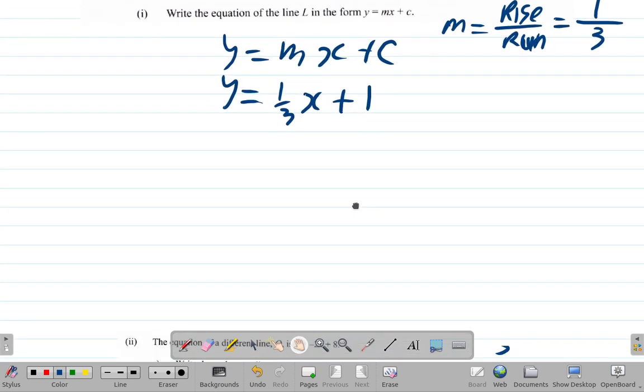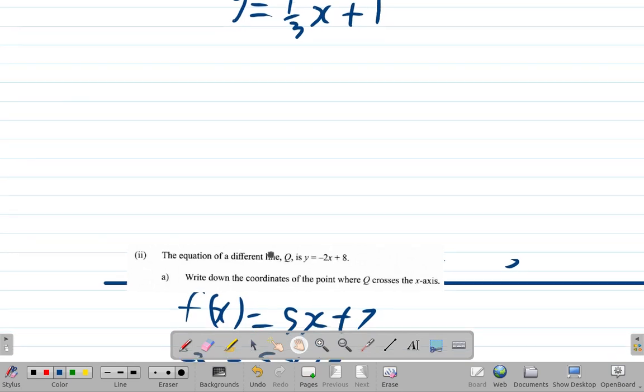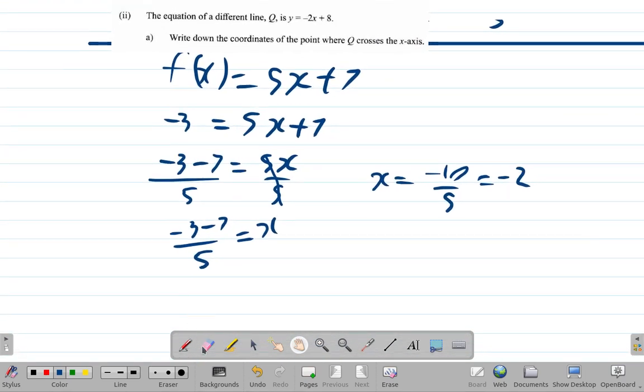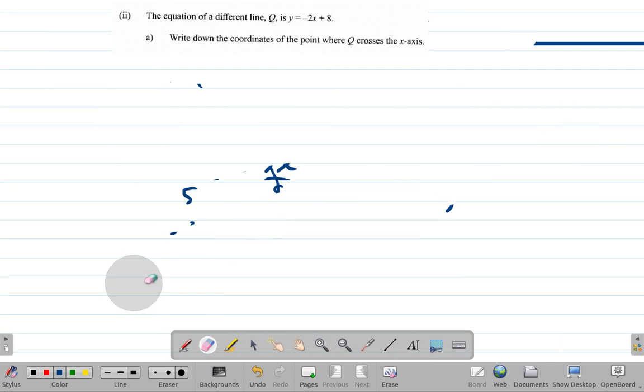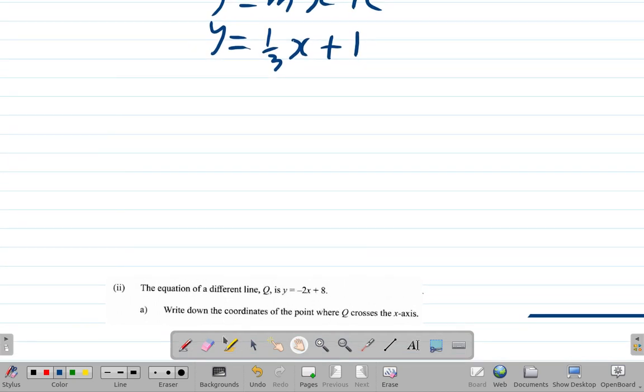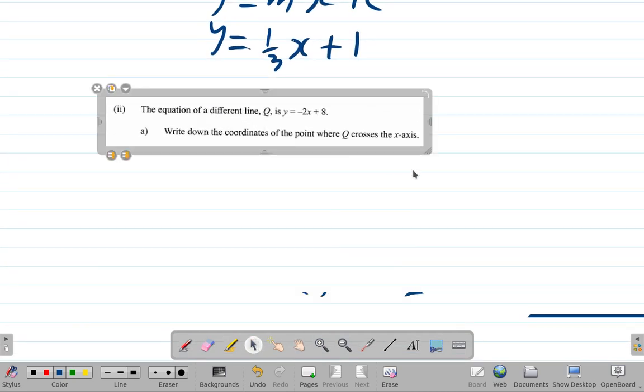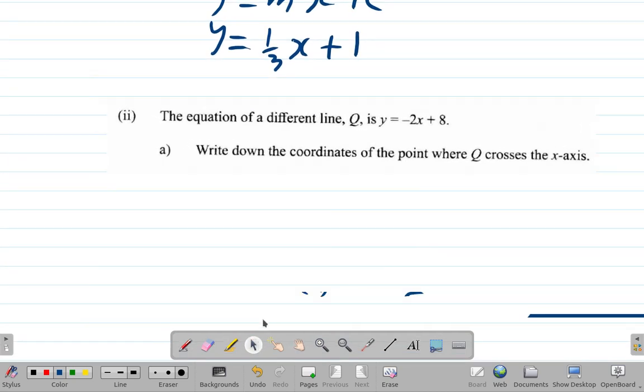The next part of the question: the equation of a different line Q is y equals -2x plus 8.